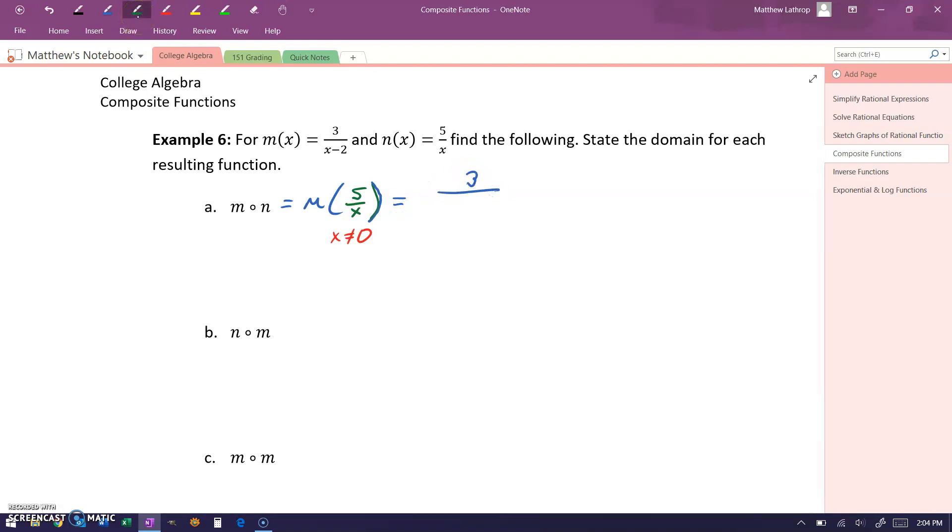Substituting into our original function, we'll get 3 over 5 over x minus 2. And then what we'll do is multiply both the numerator and denominator by x over x to clear out those complex rational fractions and get a simpler statement to work with here. So this will give us 3x over 5 minus 2x.